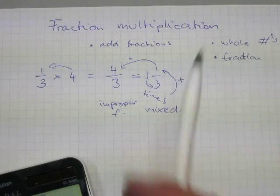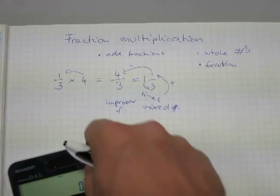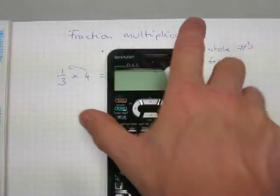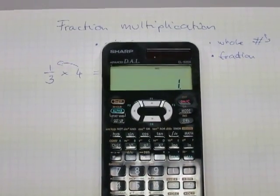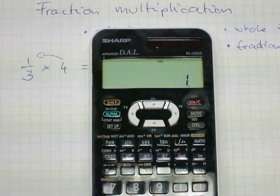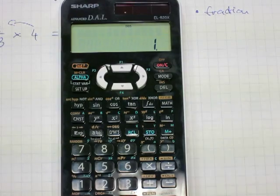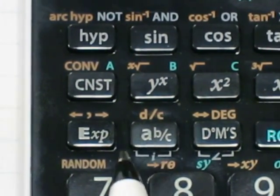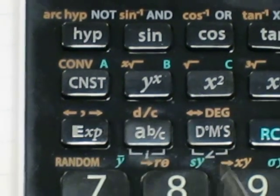Now on a calculator, this is how it looks. I'm going to be using the ABC button. Let me zoom in so you can see it. There is this special ABC button — it says ABC on it, and above it it says D over C.